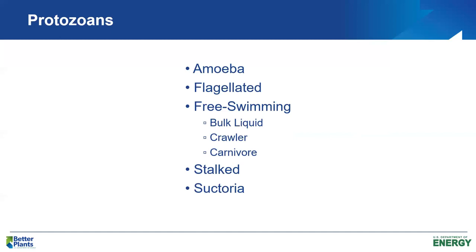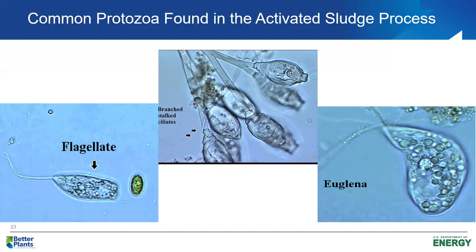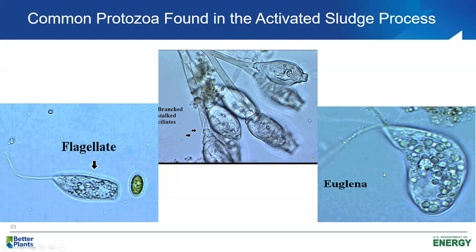Free-swimming organisms move around very quickly, have high energy requirements, and are generally present in large numbers when operating at very high organic loading. Crawlers crawl over and around the biological floc. Carnivores feed on bacteria and also on amoeba, flagellates, and free and stalk ciliates. Stalk ciliates are important because generally, if we have a good settling activated sludge, we'll normally have a good population of stalk ciliates in the mixed liquor. On the left is a picture of a flagellate — the flagella come out from the main body and are whipped around to find food.